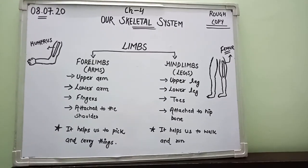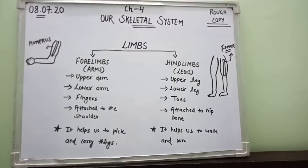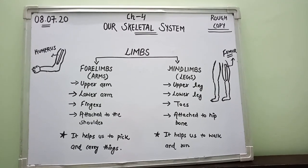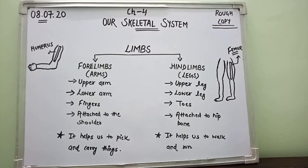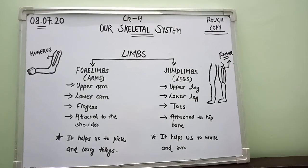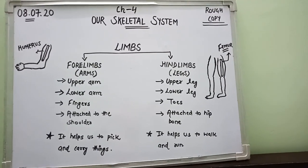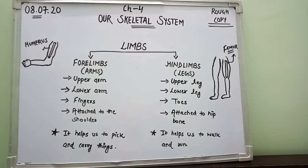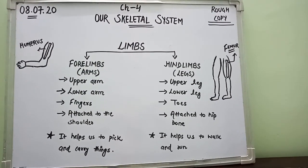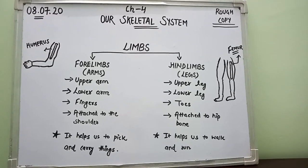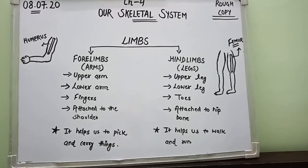Let's study about limbs. Do you know what limbs are? Your legs and your arms are considered as limbs. We have two different parts: the first is forelimbs and the second is hind limbs. Both are really very essential.